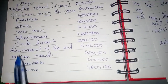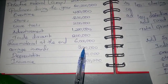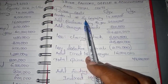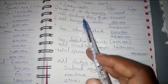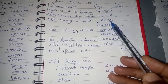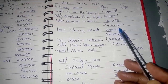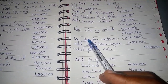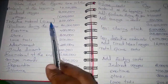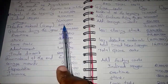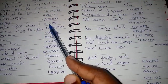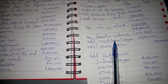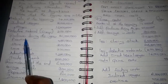Carriage inwards is 800,000, so we include that. For prime costs, we have: materials at the beginning, add purchases during the year, add carriage inwards, less closing stock, and then we also less defective materials — which is scrap — at 200,000. Then we add direct labor or wages, which is 1.6 million.